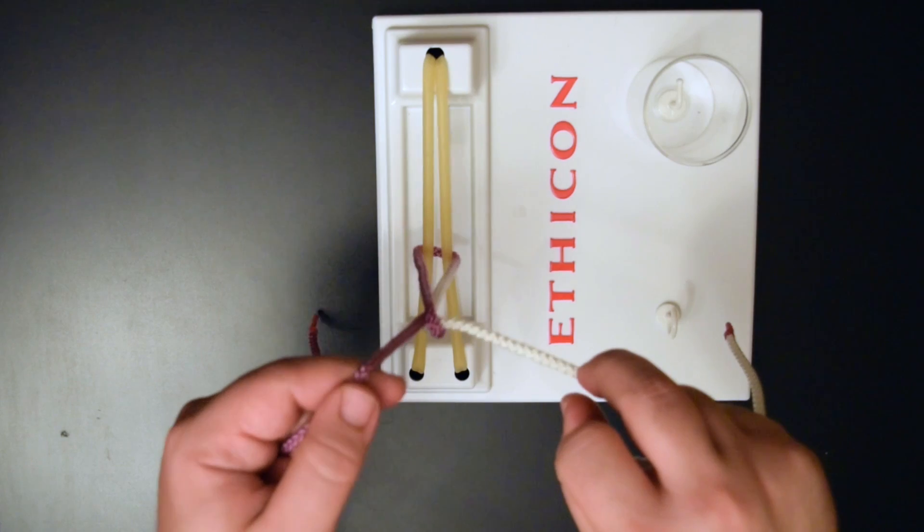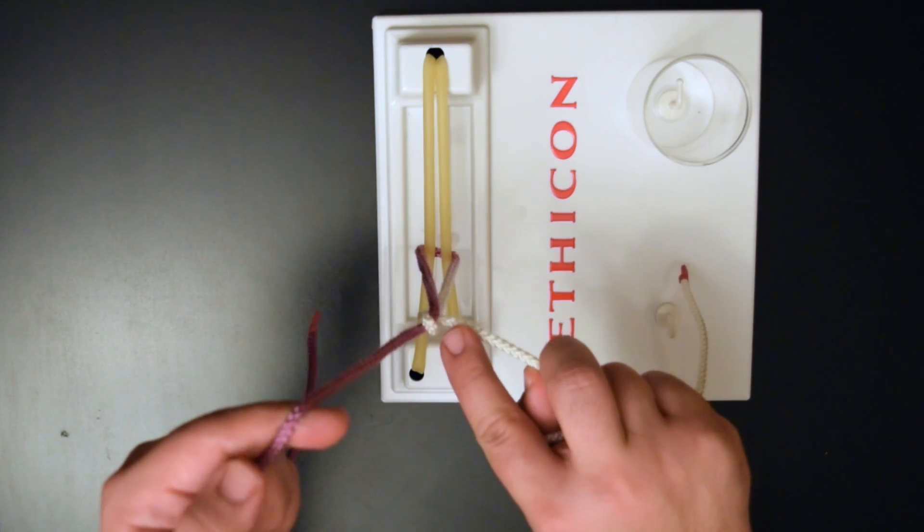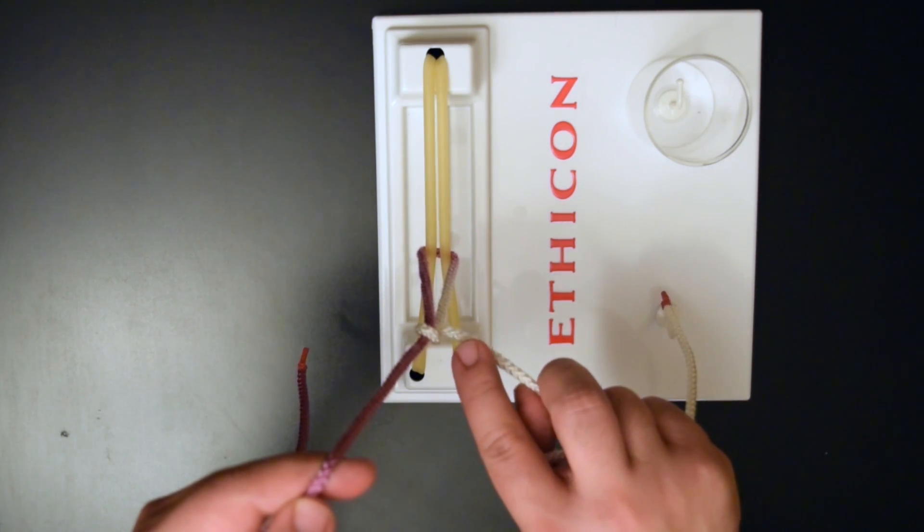And then what you're going to do is lift up with your left hand and this flips your suture. Your left hand is always going to be straight in the air as you're doing this knot.